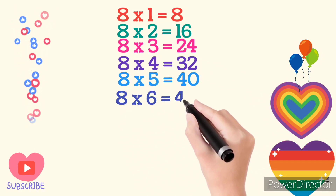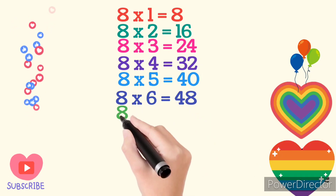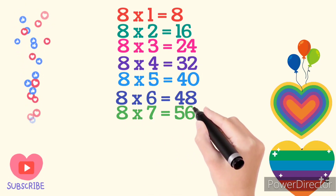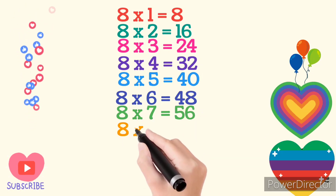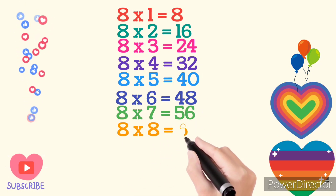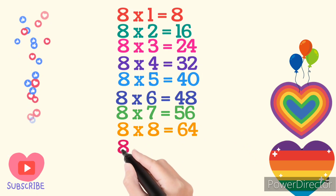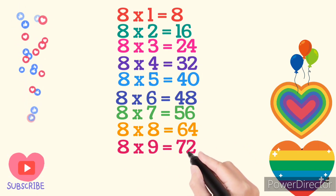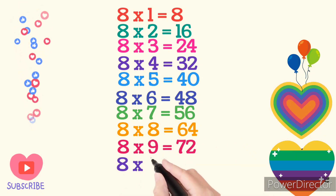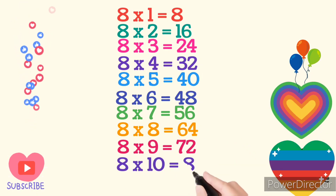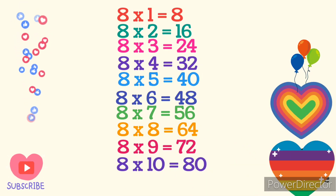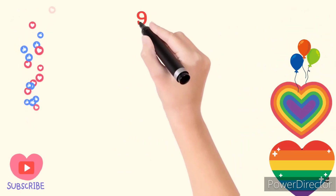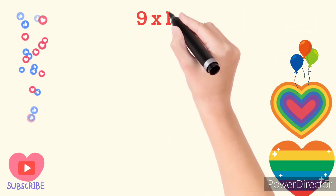8 times 6 are 48. 8 times 7 are 56. 8 times 8 are 64. 8 times 9 are 72. 8 times 10 are 80. Table of 9.